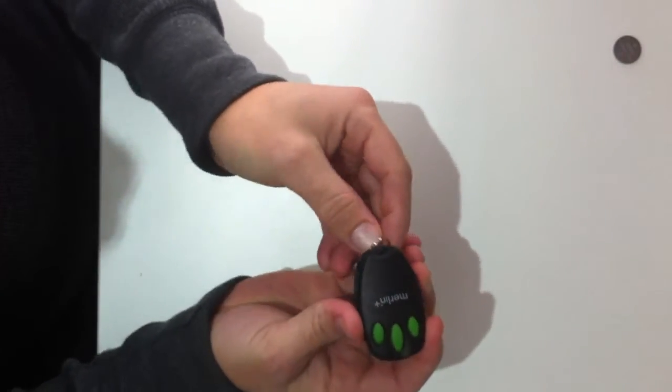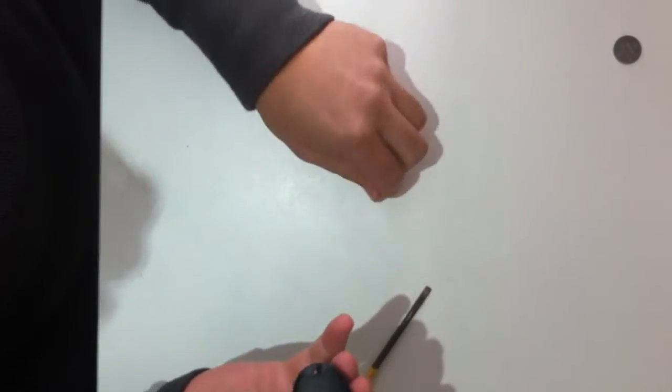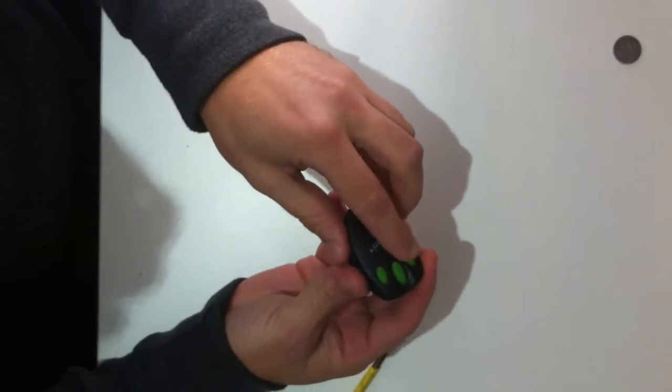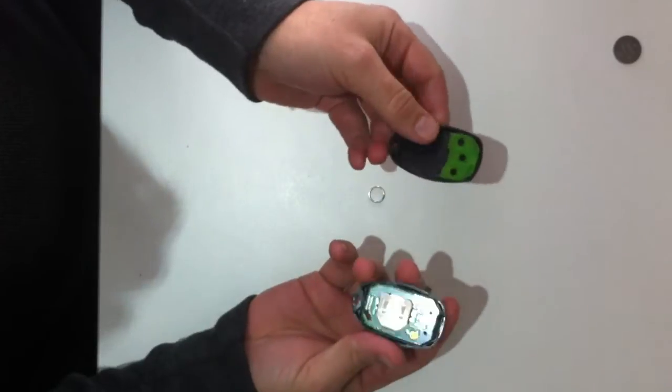Now if you've got a keychain holder on it, that will come off. So just take that off and then the opener just pulls apart in half.